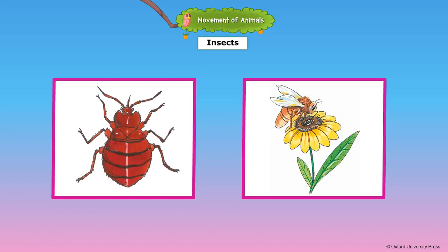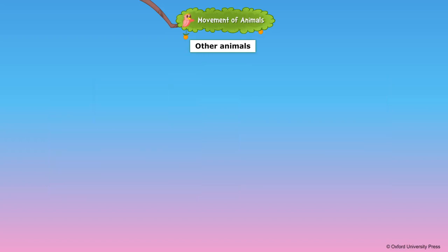Some insects have two pairs of wings. These insects fly using these wings, which have powerful muscles. For example, house flies and bees flap their wings very fast to fly.